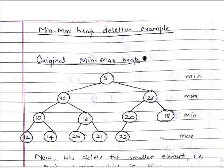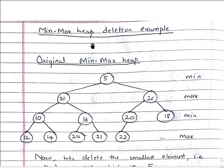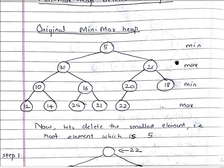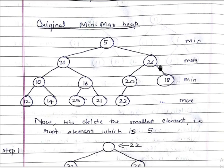Here we have a min-max heap deletion example. This is our original min-max heap. We have min level, max level, min level, max level. At our root, we have the number 5, which is the smallest element among the whole original min-max heap.